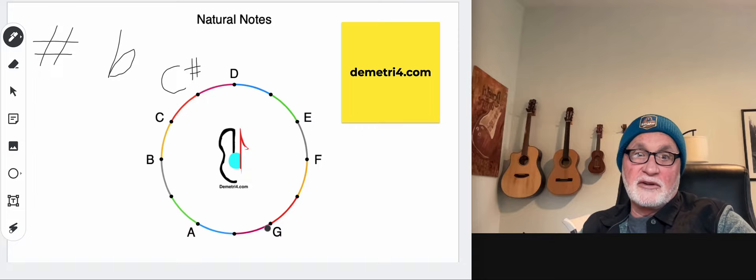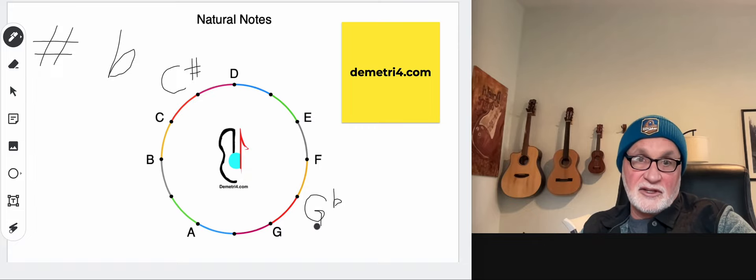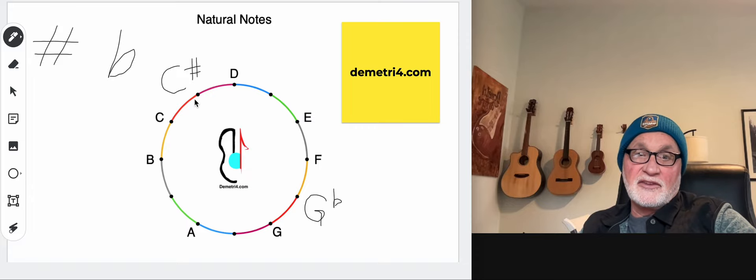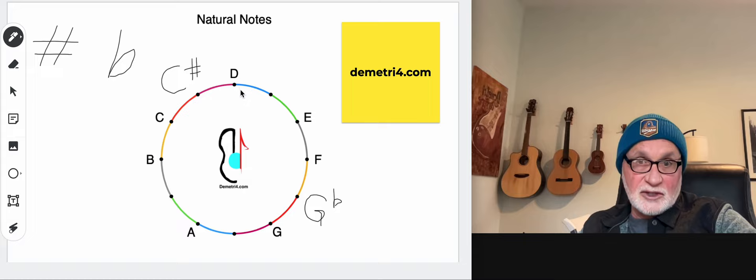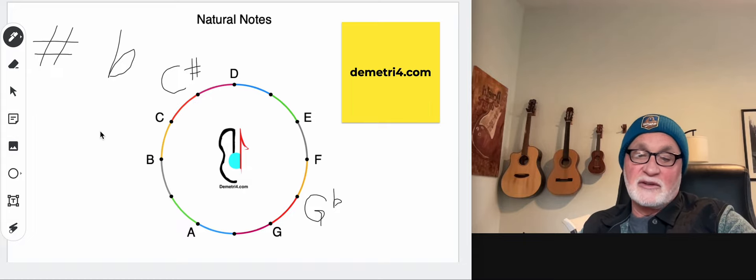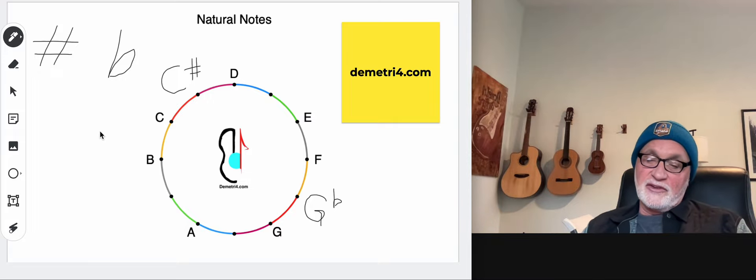Or we can go the other way. We say, okay, I want this G to go counterclockwise to this dot. Then here I'm going to have a G flat. And that is an altered natural note, G to G flat, C to C sharp. And those are going to be different. When we play those on our instrument or we sing those notes, those notes are different. They're the notes in between C and D or the note in between F and G. And we'll go through all of that. This is just an introduction.